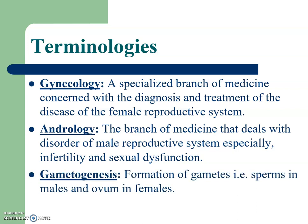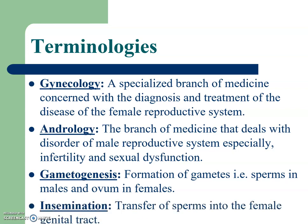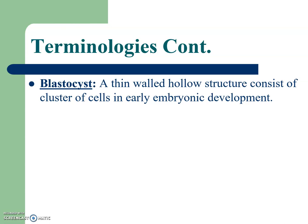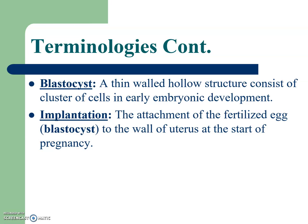Gametogenesis is defined as the formation of gametes, i.e., sperms in males and ovum in females. Insemination is defined as the process of transfer of sperms into the female genital tract. Blastocyst is a thin-walled hollow structure consisting of a cluster of cells in early embryonic development. Implantation is the attachment of the fertilized egg, i.e., blastocyst, to the wall of the uterus at the start of pregnancy.